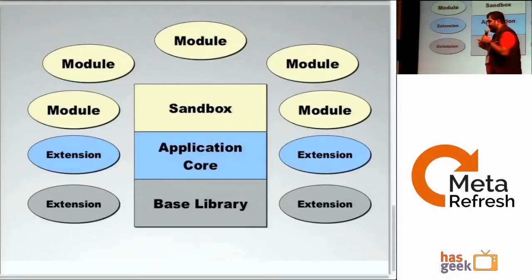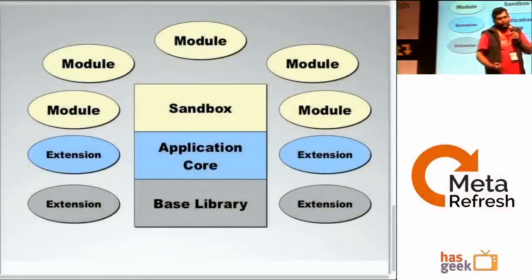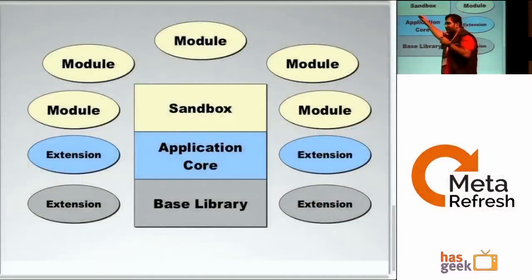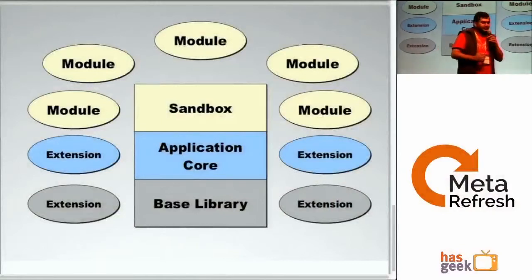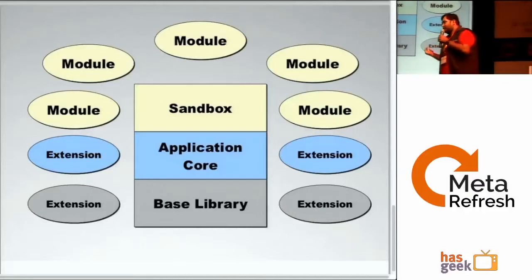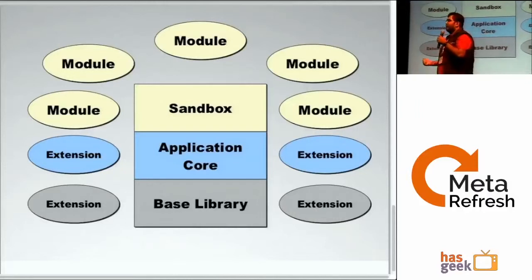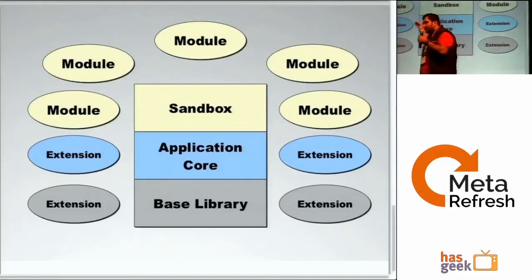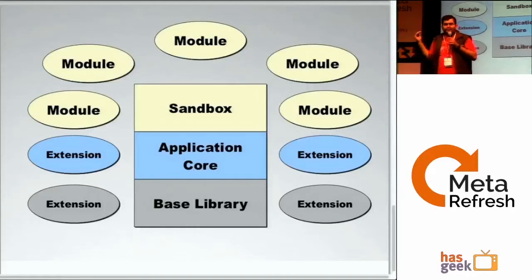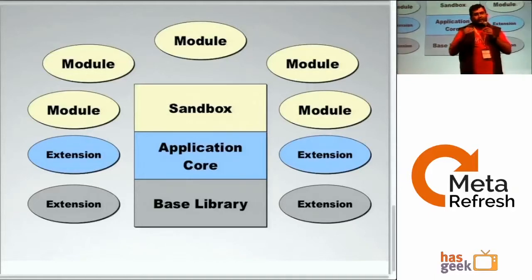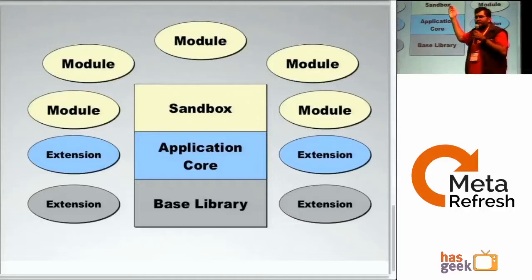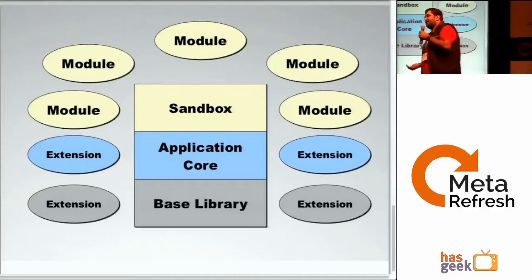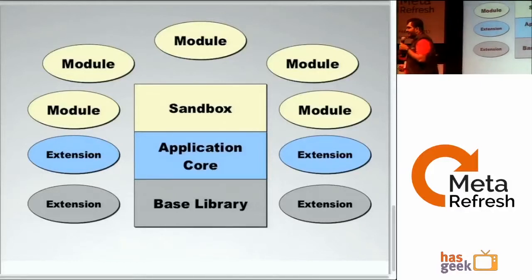Each module is a single responsibility module. If it handles more than one concern, you're doing it wrong. It should only handle one concern, and that also improves the testability of the code. All communication that happens between modules is through a common sandbox available to the module. Only the sandbox knows that there are other modules — no module of your app knows about other modules. The advantage is that if a module fails, the rest of your app is still working. Modules have to notify the sandbox, and the sandbox in turn will notify the application core, where that decision will be taken.